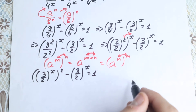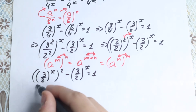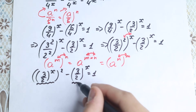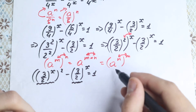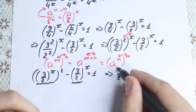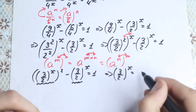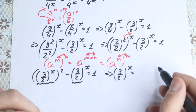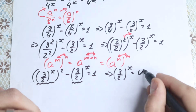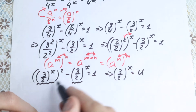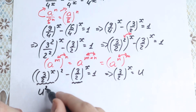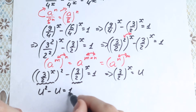What are we going to do next? Take a look closely — we have 3 over 2 to the power x, and 3 over 2 to the power x. This is really great because we can substitute this expression. Let's write 3 over 2 to the power x as u. We will have u squared minus u equal to 1.